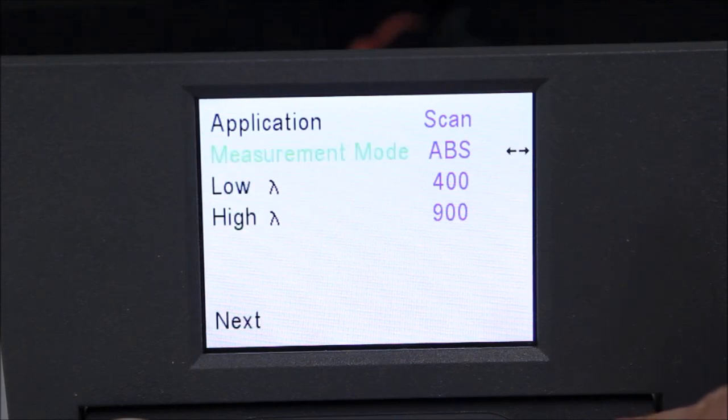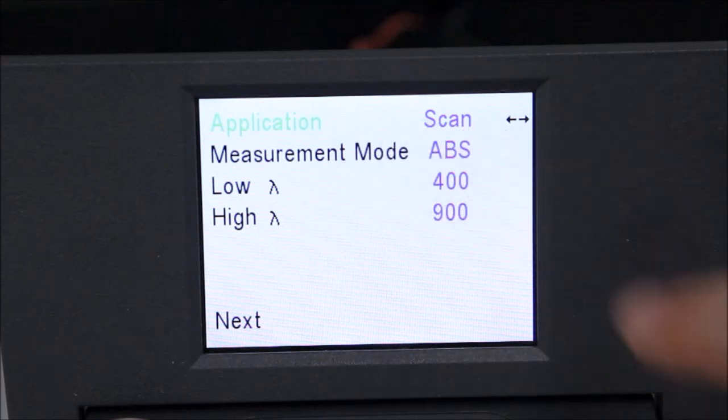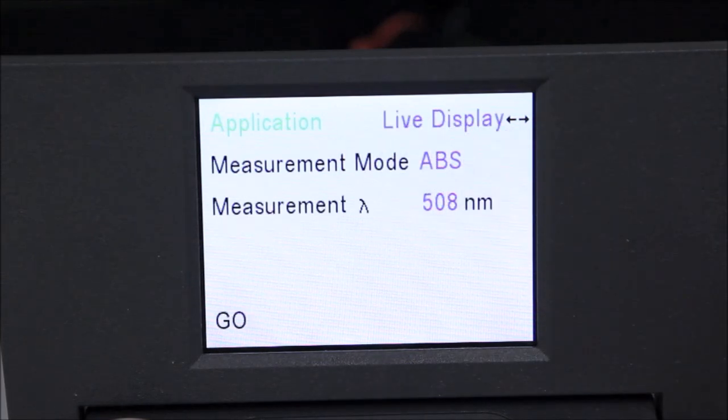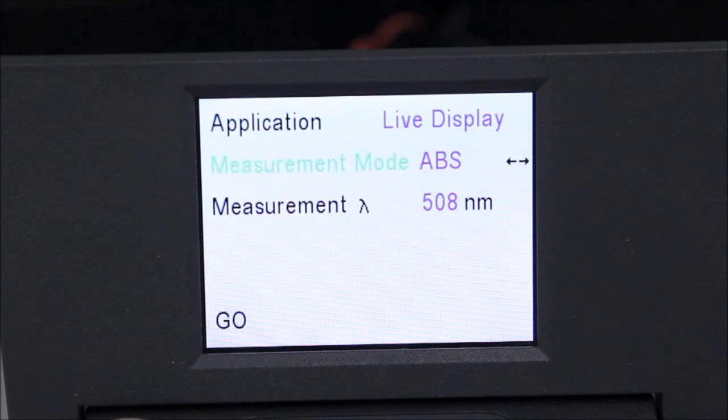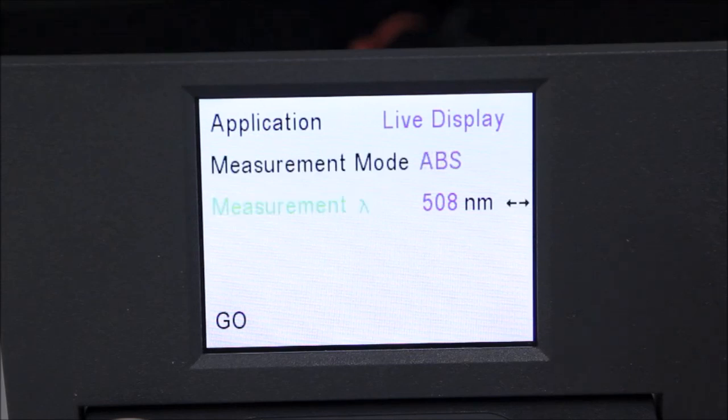Once we know the analytical wavelength for our solution, it is usually best to use the live display application. The live display application will give us the option between absorbance and percent transmittance output, as well as allowing us to change the wavelength if necessary.